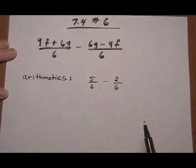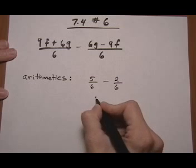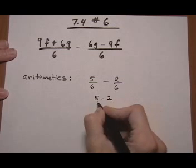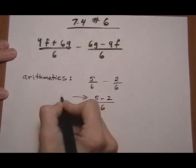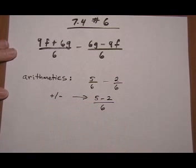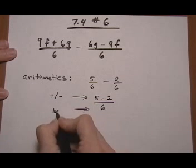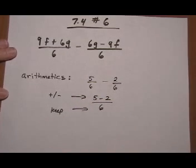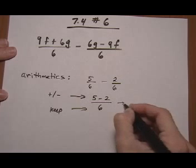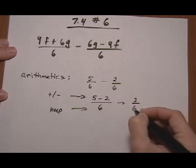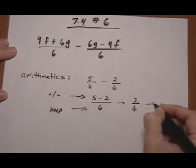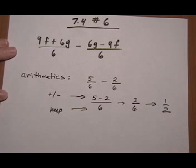All we do is go right across and add or subtract the numerator. 5 minus 2 and keep the denominator. So that's add or subtract the numerator, keep the denominator. And that would give us 3 out of 6, and we would reduce that to 1 half.